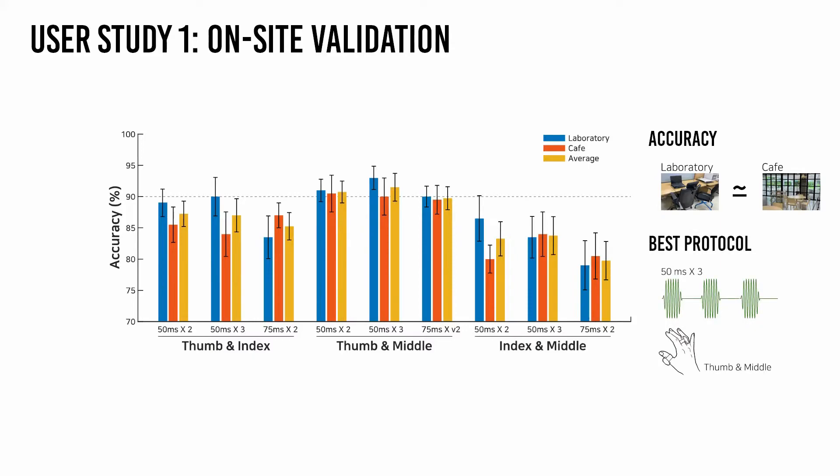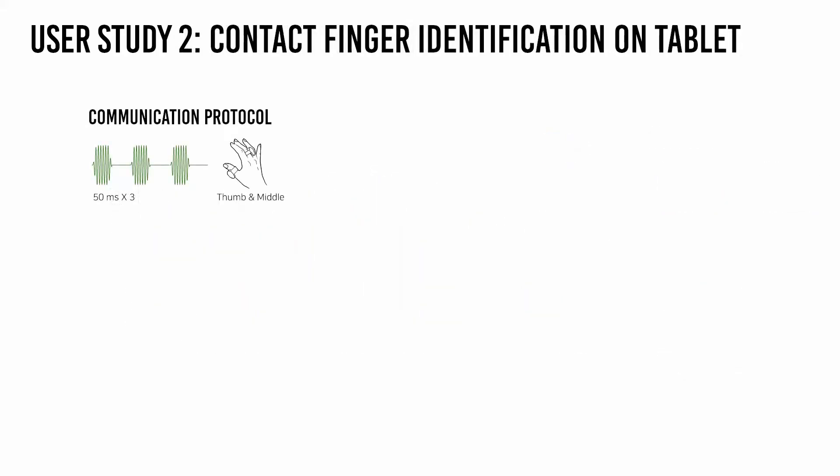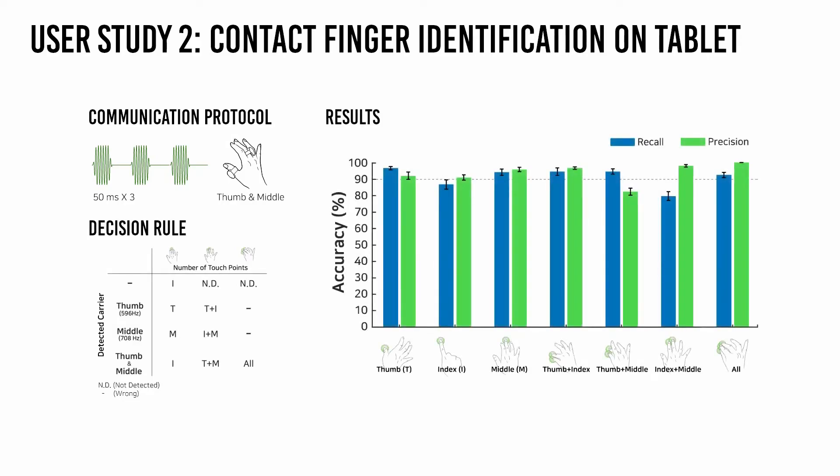The best performing protocol was repeating a 50 millisecond long pulse three times and wearing rings on the thumb and middle fingers. We demonstrated the effectiveness of our vibratory communication as a finger identification method with a touch screen. Our system achieved over 91% accuracy in identifying seven contact states enumerated from three fingers while wearing only two actuator rings with the aid of a touch screen.